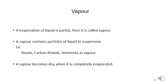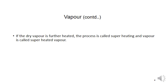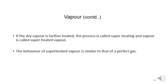Examples of vapors include steam, carbon dioxide, and ammonia. If the dry vapor is further heated, the process is called superheating and the vapor is called a superheated vapor. When heating continues, the dry vapor temperature keeps increasing, and it is called a superheated vapor. The behavior of a superheated vapor is similar to that of a perfect gas.